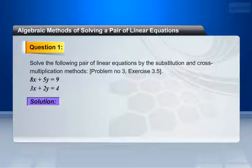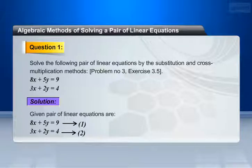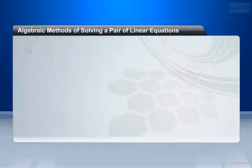Let's see the solution. The given pair of linear equations are: 8x plus 5y equals 9 — make it equation 1; 3x plus 2y equals 4 — make it equation 2. Here we are using the substitution method.